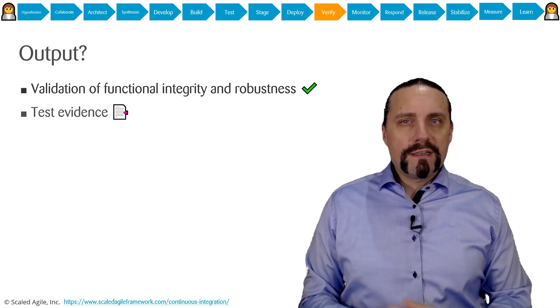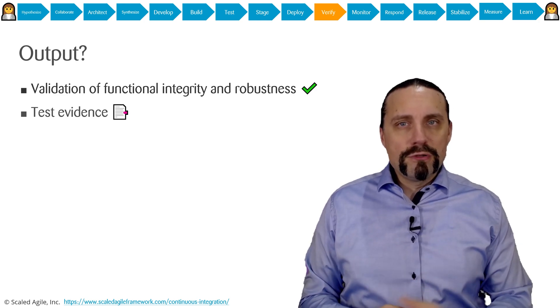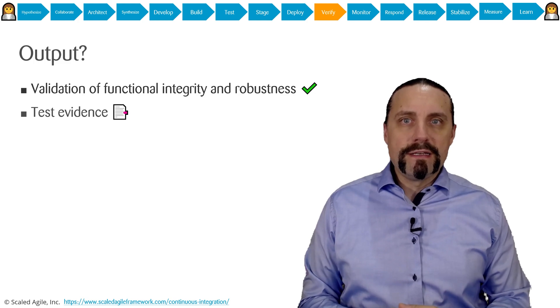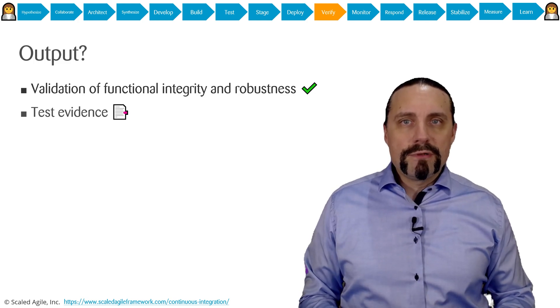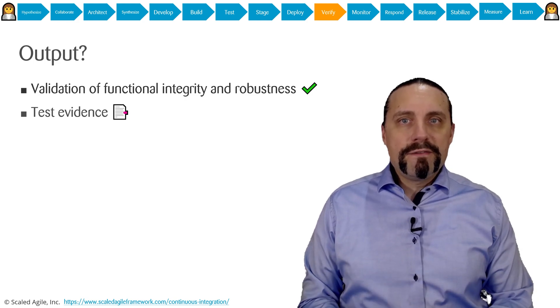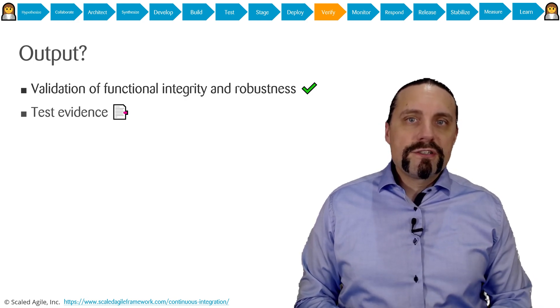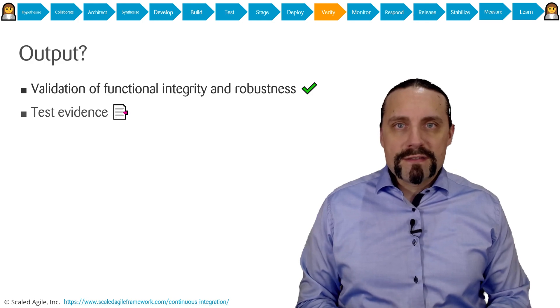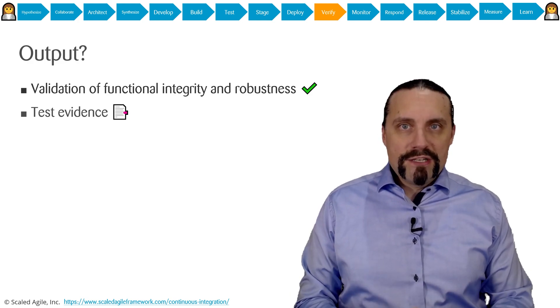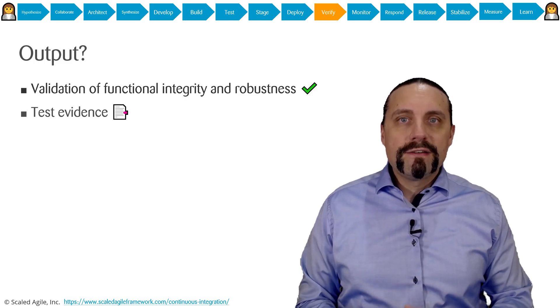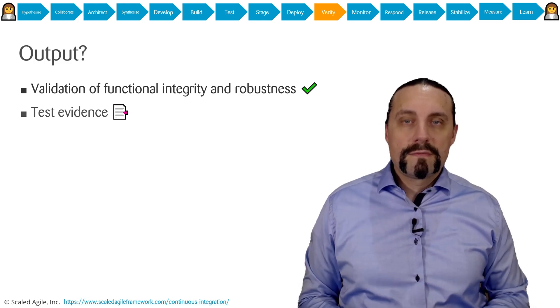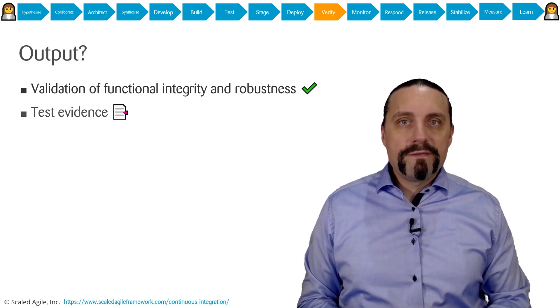So now what exactly is then the output which we have when we finish this step verify? It's quite simple. We have verified the functional integrity and the robustness of the changes which we have introduced into production, and therefore we get a test evidence for that. And that's the output of the verify step.